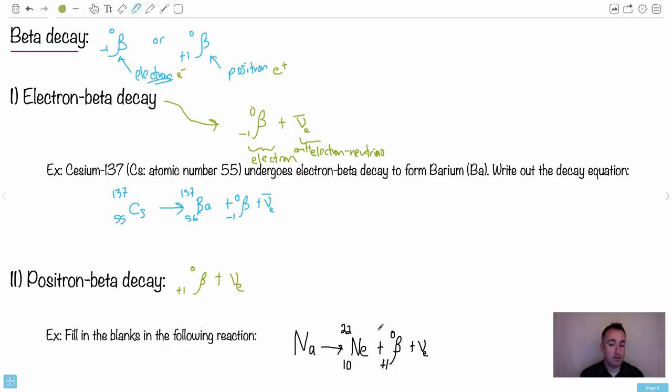We have a nice simple example here: fill in the blanks for the following reaction. This is sodium becoming neon-22 plus a positron plus electron neutrino. What do we do with this? We again just have to do the math—it's almost too easy, isn't it? I love these questions; they're so simple. So 10 plus 1 is 11, so hopefully sodium is the 11th element on the periodic table, and 22 plus 0 is 22. There we go. So we know it's sodium-22. That wasn't so bad, was it?